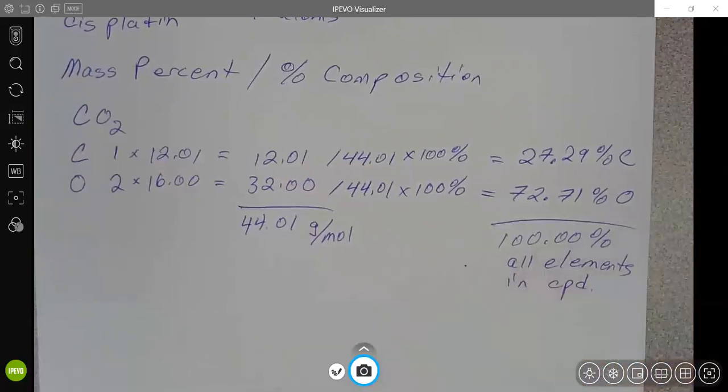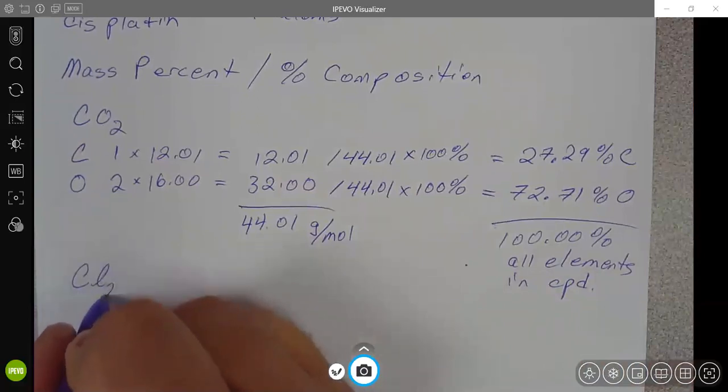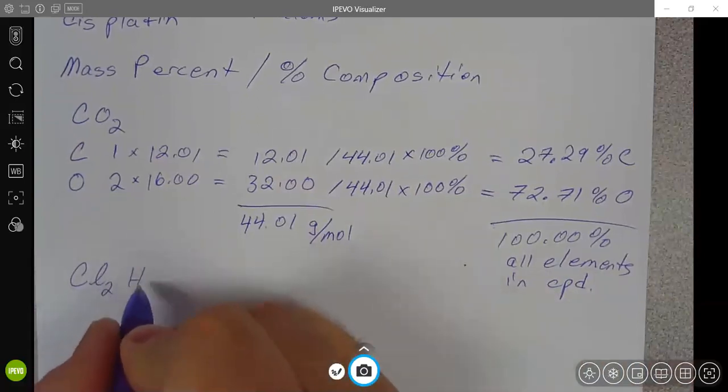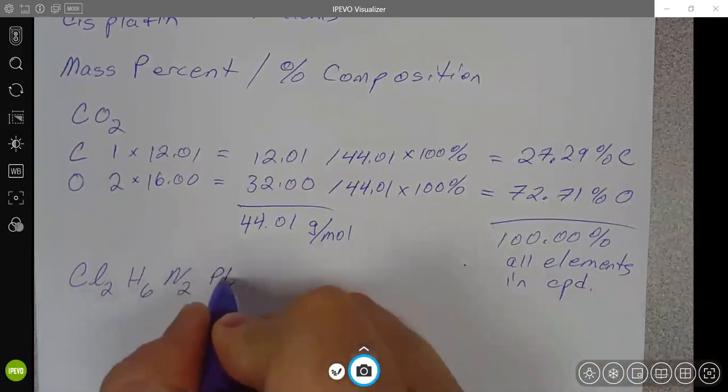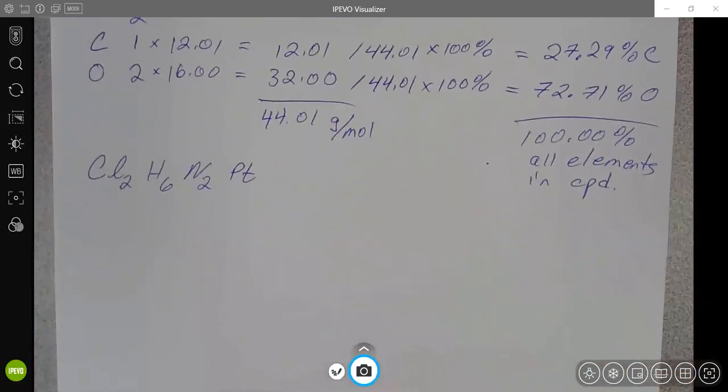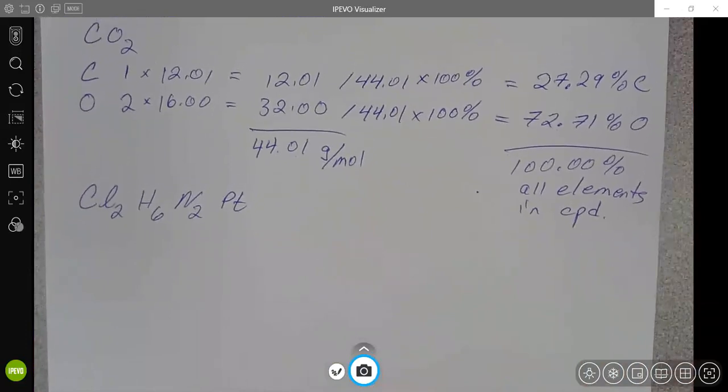So let's go ahead and do cisplatin. So here's cisplatin. The formula is two chlorines, two, six hydrogens, two nitrogens and one platinum. So for practice, why not go ahead and build up the molecular mass or the molar mass table until you can calculate the molar mass of this. You could also probably find your work for this on a prior worksheet.